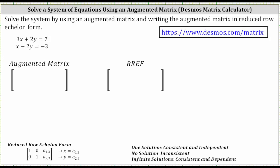This lesson will show how to solve a system of two equations with two unknowns using an augmented matrix and writing the augmented matrix in reduced row echelon form using the Desmos matrix calculator.